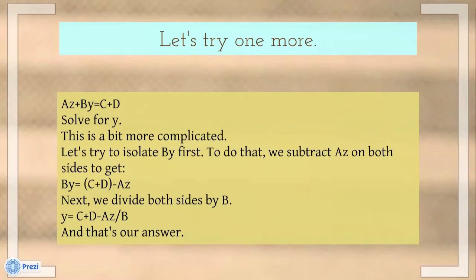Next, we divide both sides by b. y equals c plus d minus az over b. And that's our answer.